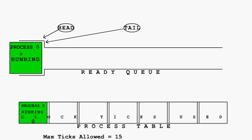Next, I would like to note the two pointers labeled Head and Tail in the circles at the top of the model. The head always points to the head or front of the ReadyQ. When a process is in this particular place in the queue, it is considered an active running process. All processes behind or to the right of the first process are considered to be in the ready state. The very last process will have the tail pointer pointing at it.